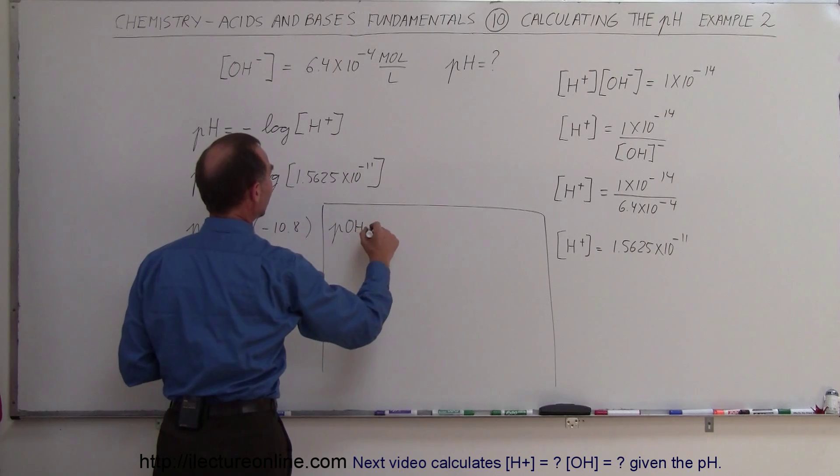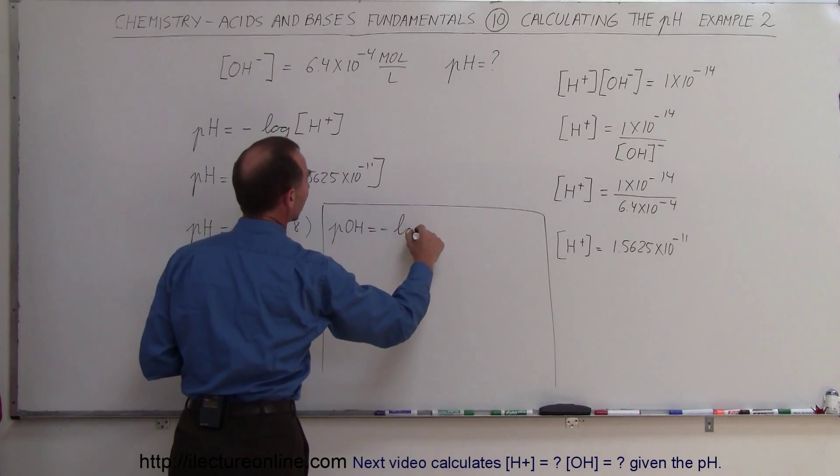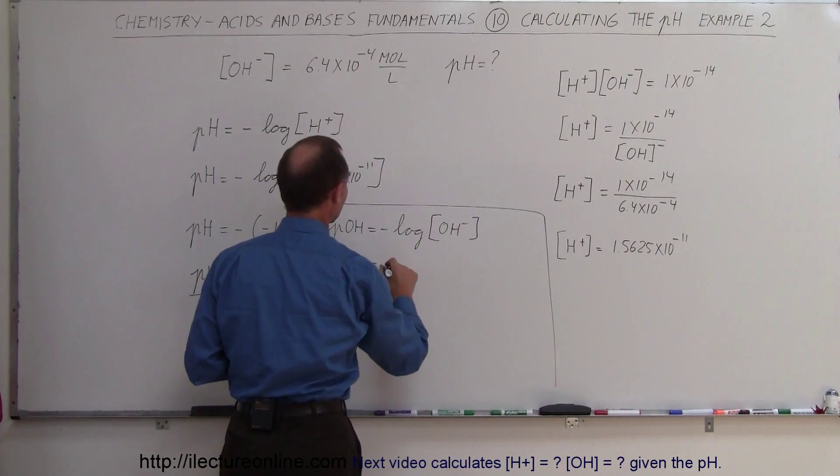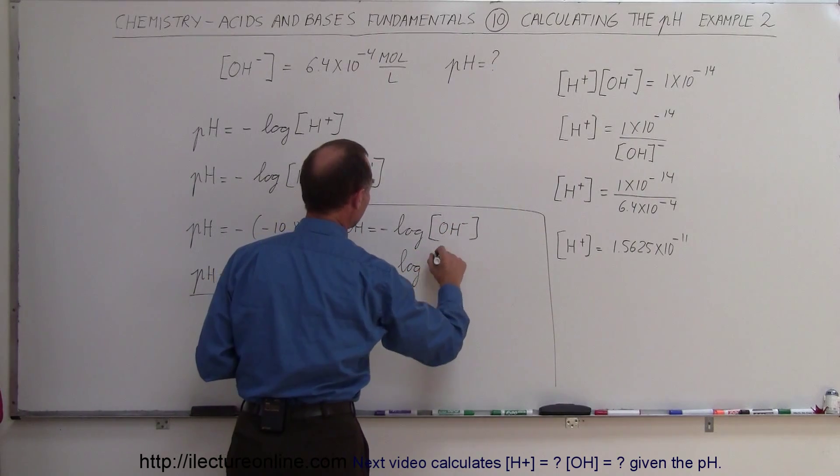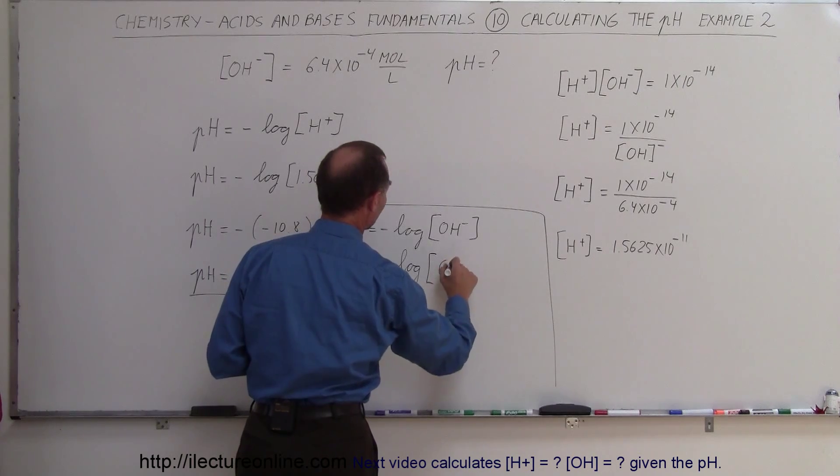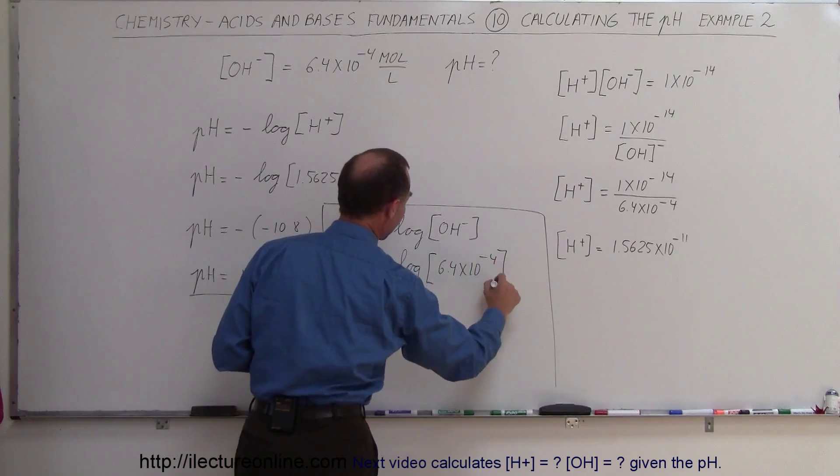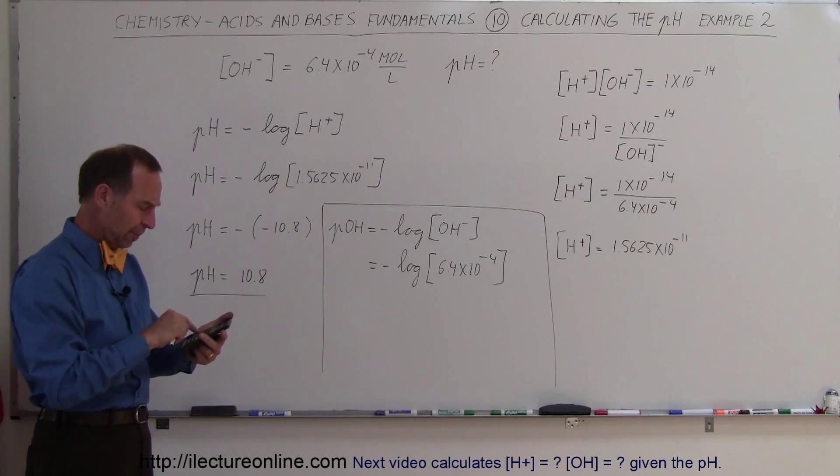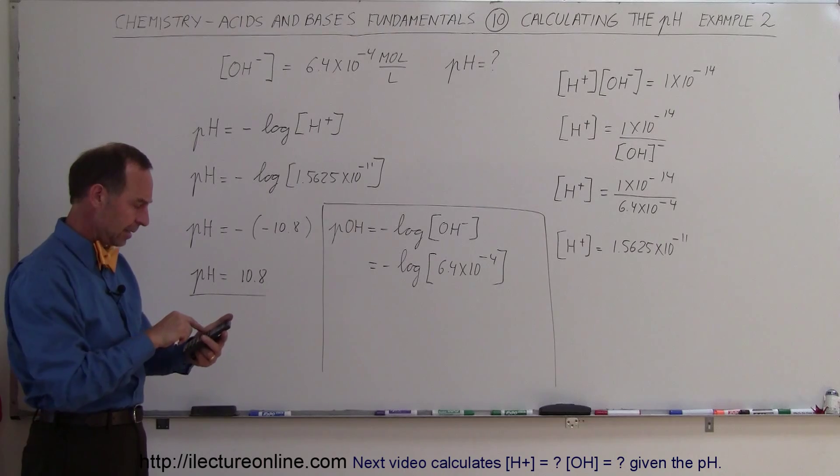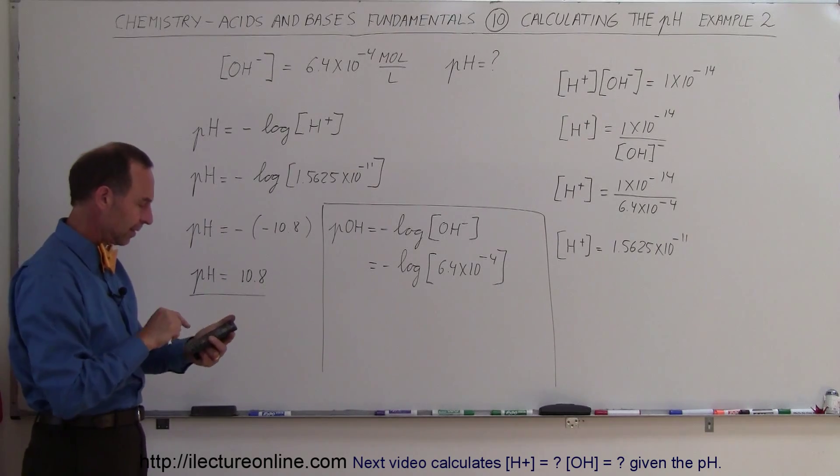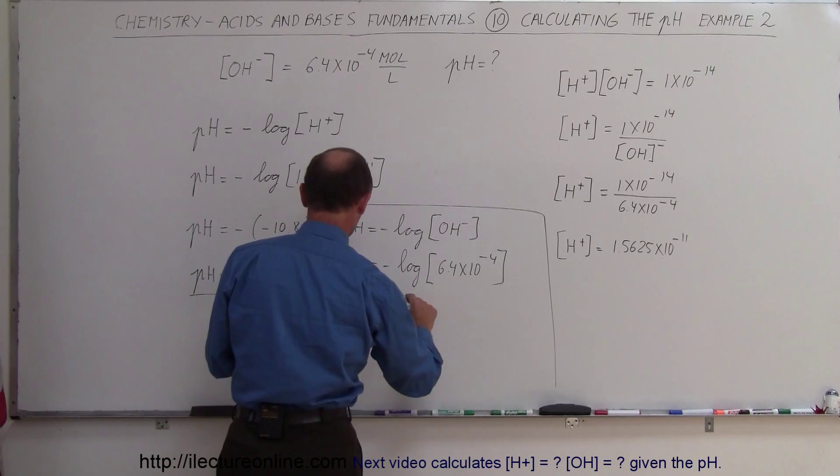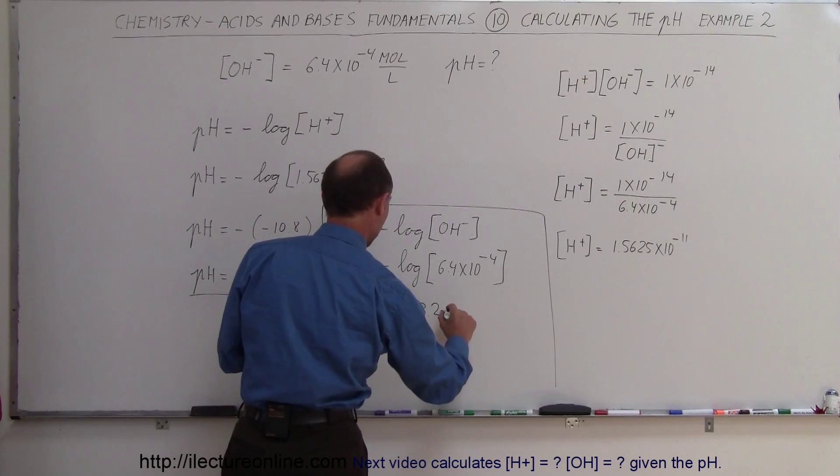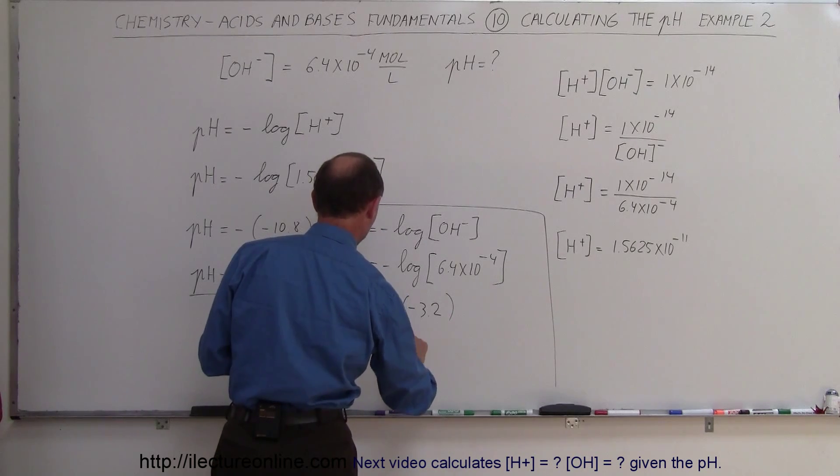Because the pOH, just like for the pH, is equal to negative the log of the concentration of the hydroxide ion. So this is equal to minus the log of 6.4 times 10 to the minus 4. So let's try that. So 6.4 e to the 4 minus, and take the log of that, and so we get this is equal to minus minus 3.2. So this is equal to a positive 3.2.